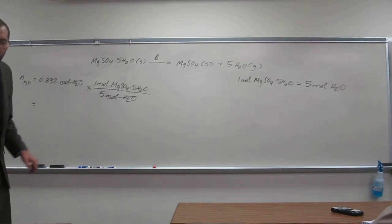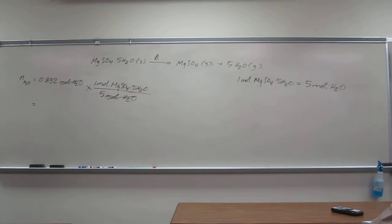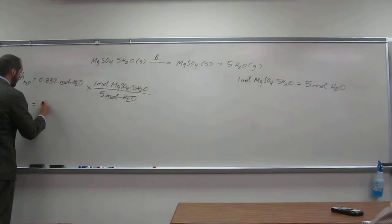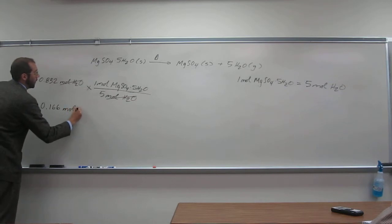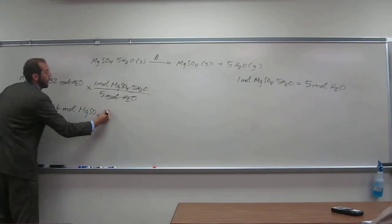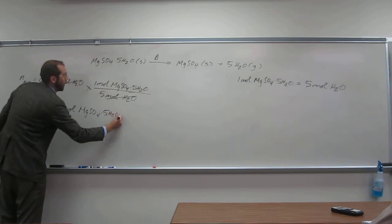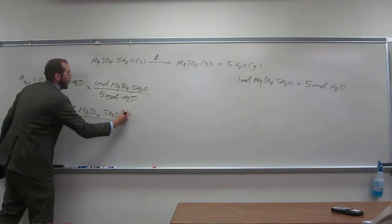So all we've got to do is plug and chug it, and we've already plugged it, so let's chug it. So divide it by five, and I just did it from what I had saved over from the last one. So 0.166 moles magnesium sulfate hydrate.